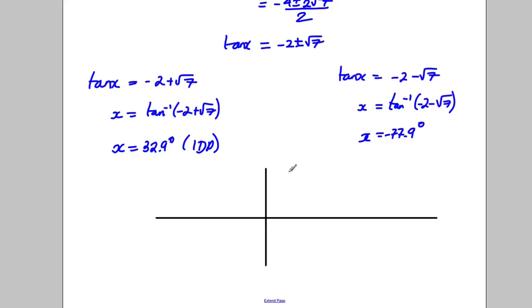Remember the tan graph looks like this: that's up to 90, that's down to negative 90, and it goes up here to 180 and down here to negative 180. Now my answers are 32.9 so there's one answer there, but clearly there'll be another answer there, so it's 32.9 from 0, so it'd be 32.9 from the negative 180, so it'd be negative 180 plus 32.9. The other answer is negative 77 which would be here somewhere, so there's another answer over here which would be 180 subtract the 77.9.